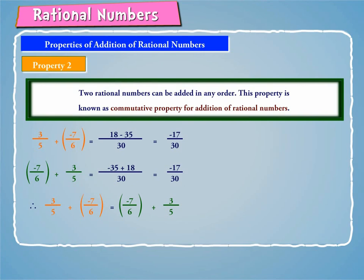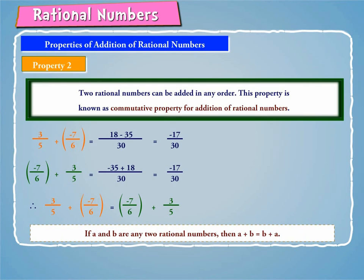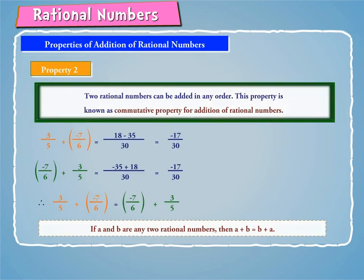Hence, two rational numbers can be added in any order. This property is known as the commutative property for addition of rational numbers. Thus, if A and B are any two rational numbers, then A plus B is equal to B plus A.